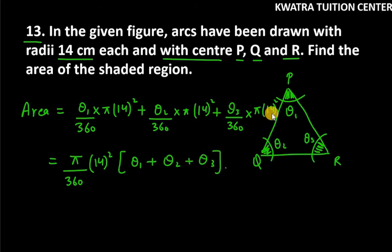So now we know that sum of all the angles in a triangle is 180 degree, right? Angle sum property. So pi over 360 into 14 square, and theta 1, theta 2 and theta 3 will be replaced by 180.